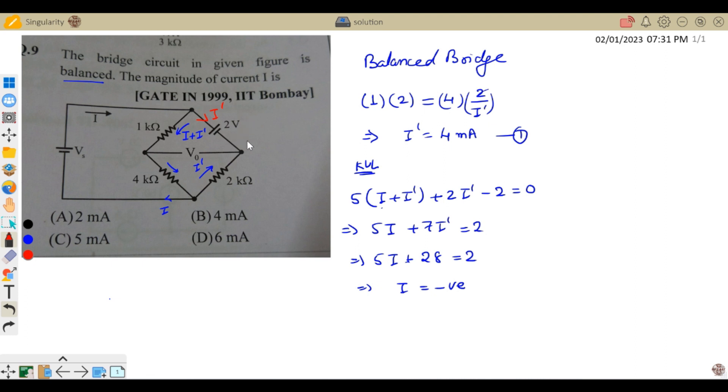Now the equation changes. Current is I minus I prime, same current here, and there is a direction change for I prime. Now if we go to KVL: 1 plus 4 is 5, so 5(I - I') minus 2I' minus 2 = 0. Rearranging: 5I - 7I' = 2.